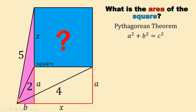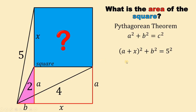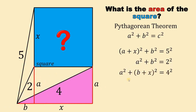Now, using this right triangle with the hypotenuse of 5 units, using Pythagorean theorem, we have (a + x)² + b² = 5². Next, on this right triangle with the hypotenuse of 2, using Pythagorean theorem, we have a² + b² = 2². And for the last one, on this right triangle with the hypotenuse of 4, using Pythagorean theorem, we have a² + (b + x)² = 4². Now we have three equations and three unknowns, and our goal is to solve for the value of x, or simply x squared, which is the area of the square.